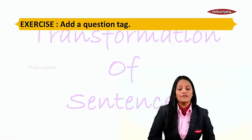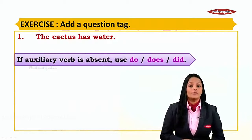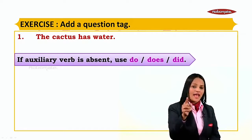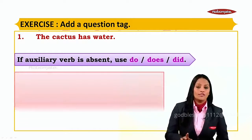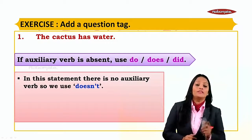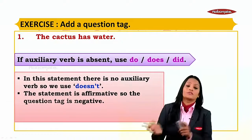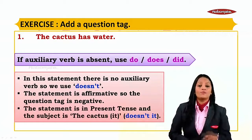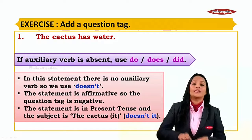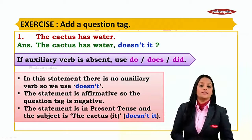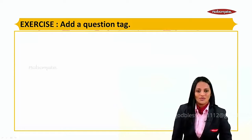Let's go on to the exercise. First one: 'The cactus has water.' If the auxiliary verb is present, you use the same; but if it is absent, you use 'do', 'does', or 'did'. Here, 'the cactus has water' has a single verb with no auxiliary, so we use 'does'. The statement is affirmative, so the tag is negative. The statement is in present tense, and we say 'the cactus does' - so the tag will be 'doesn't it'. The subject pronoun is 'it' because cactus is a thing. Remember the question mark.